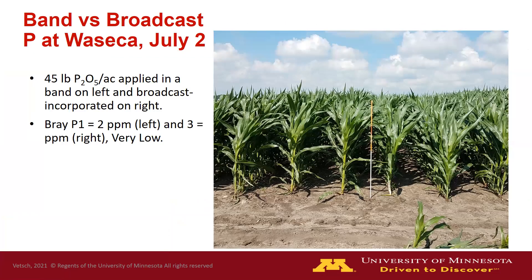This picture is from Waseca on July 2nd from the phosphorus study. It received 45 pounds of P2O5 per acre applied as a band on the left and broadcast on the right, with a white fiberglass rod painted orange dividing the two plots. Again, you can see much greater growth and leaf area index, with very little sun penetrating the canopy on the banded side compared to the broadcast. The soil test level at this site is very low — a Bray P of 2 parts per million on the left side and 3 parts per million on the right, a very low soil test you would not find in most southern Minnesota fields.